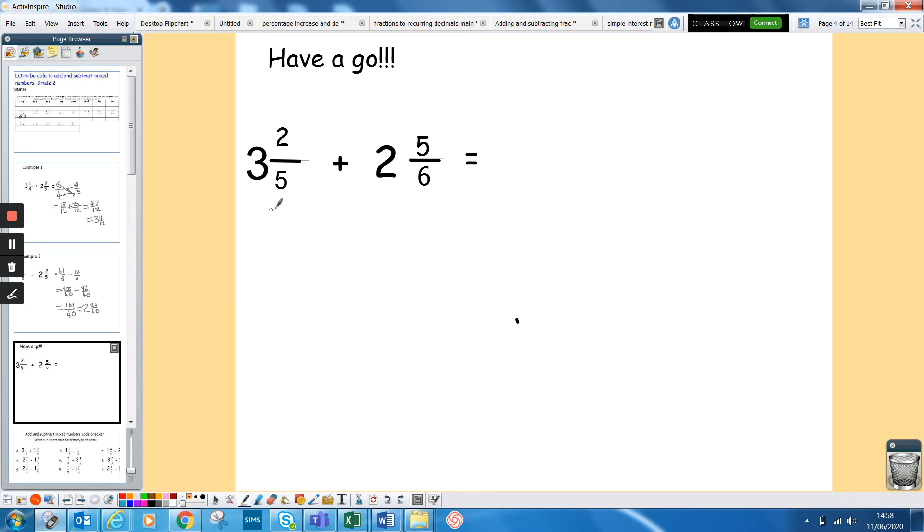Right then, hopefully you've had a go at that. I'll go through this quickly. So I've got 17 over 5 plus 17 over 6. I'll put them together and we get 30, and 15. Then 17 times 6 gives me 102, and 5 times 17 gives me 85. So I'll put them together.